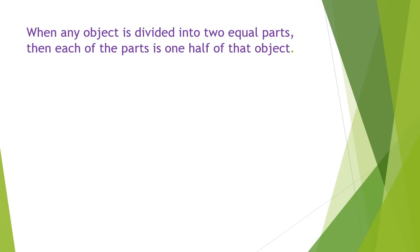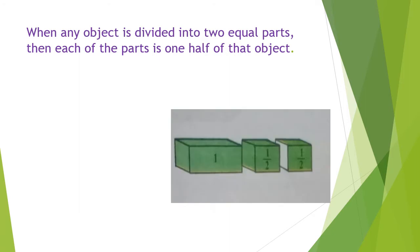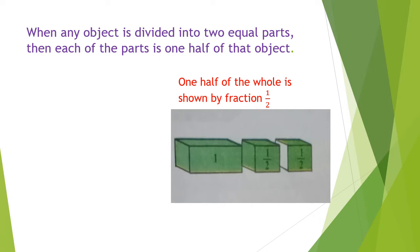When any object is divided into two equal parts, then each of the parts is one half of that object. See here — one whole part is divided into two equal parts. One half of the whole is shown by a fraction as one upon two.